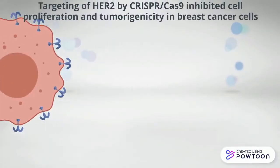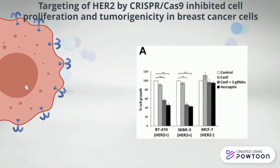To test if CRISPR-Cas9 inhibited cell proliferation, 3-guide RNAs were added to both HER2-positive and negative breast cancer cell lines throughout transient transfection to observe cell proliferation. Cas9 and 3-guide RNAs co-expression significantly reduced cell growth in HER2-positive cells, similar to when treated with the drug HER70,